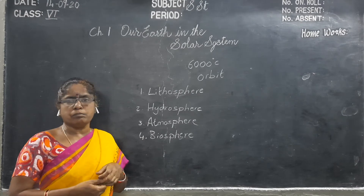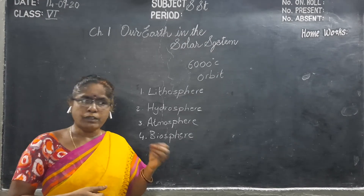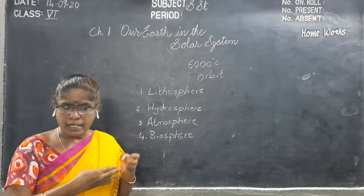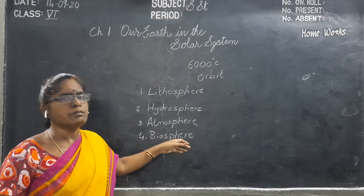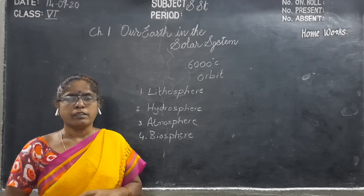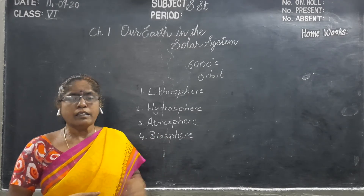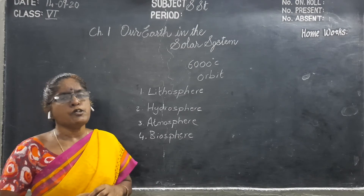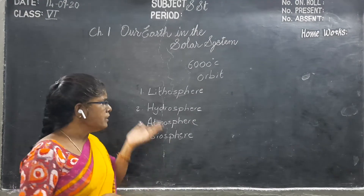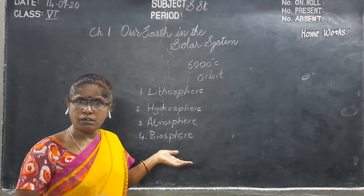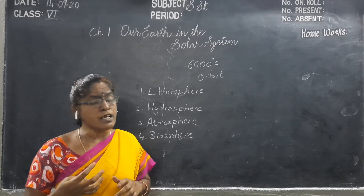The fourth one is biosphere — the life on the Earth. This includes human beings, plants, soil, water, and all living things. Life on the Earth exists in this biosphere. That's why our Earth is called a unique planet in the solar system — because this planet supports life.